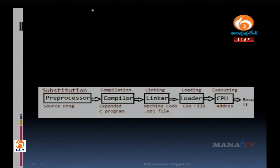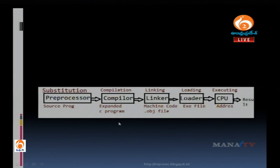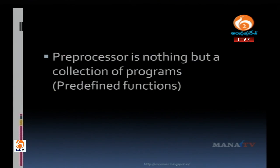When we execute the program, the linker links the header files to the .obj file. Then the loader loads it into memory, and the CPU executes the program, giving the result. This is the process from source program to executable file. The preprocessor is a collection of predefined functions stored in header files.